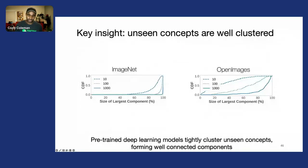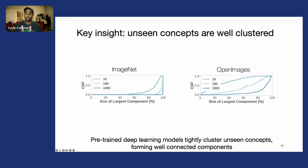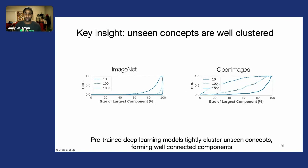The key insight we had is that unseen concepts are actually well-clustered by pre-trained deep learning models, or foundation models. In the latent space, they form tight clusters for these unseen concepts that are very well-connected components.